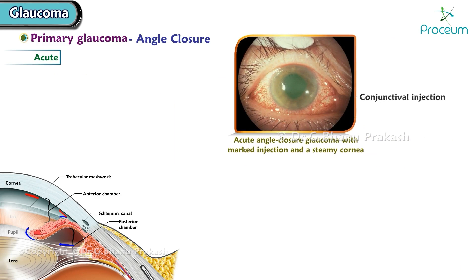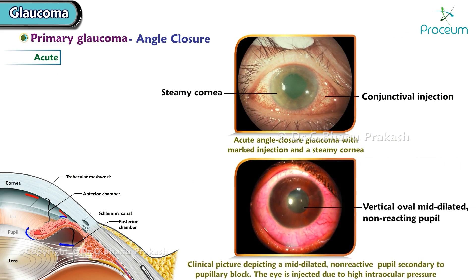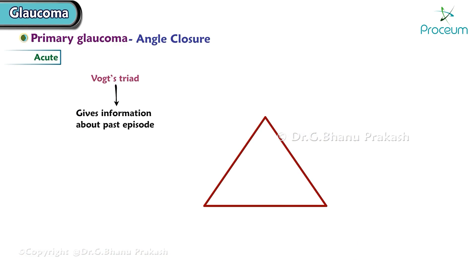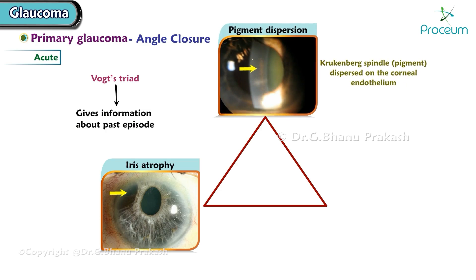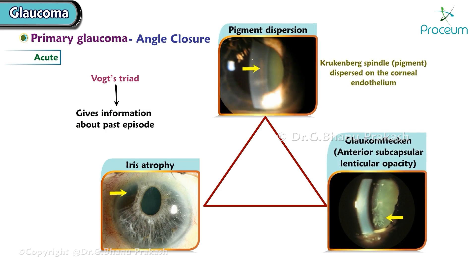The eye shows conjunctival injection, steamy cornea, vertical oval mid-dilated non-reacting pupil, and the eye is stony hard. Vogt's triad gives information about past episodes of acute angle closure glaucoma. The presence of iris atrophy, pigment dispersion, and glaukomflecken suggest a past attack.